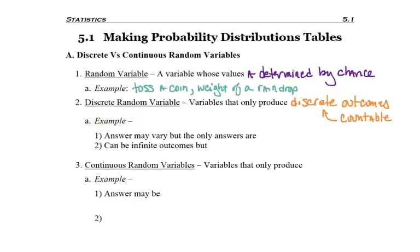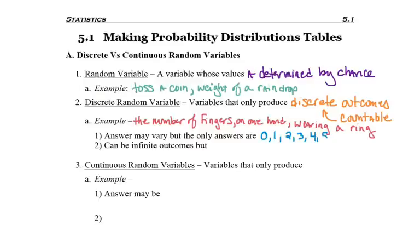For example, the number of fingers on one hand wearing a ring. The answers could vary, but the only possible answers in this case are 0, 1, 2, 3, 4, 5. Meaning none of the fingers are wearing a ring, all five fingers are wearing a ring, maybe only three of the fingers are wearing a ring, but that's it for our possible outcomes.